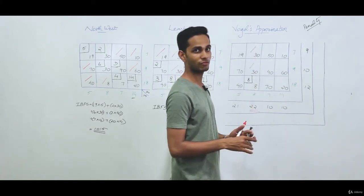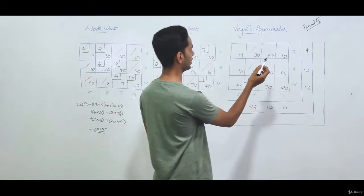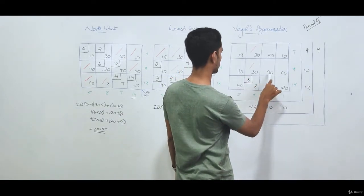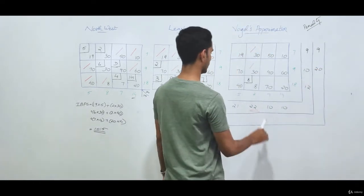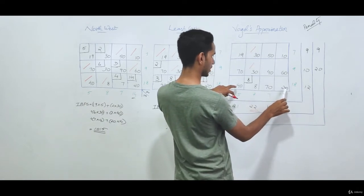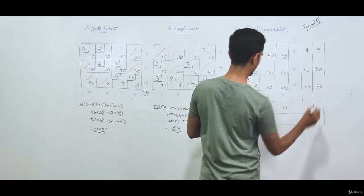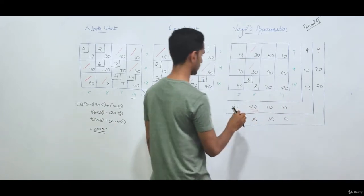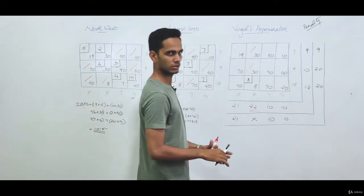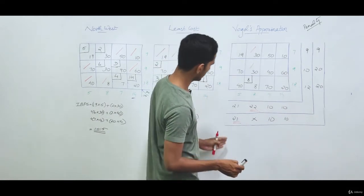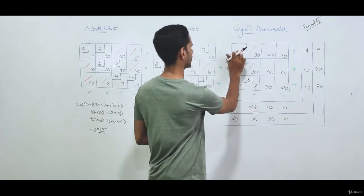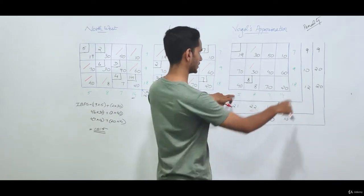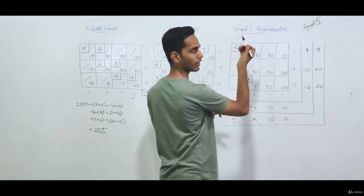We recalculate penalties after cancellation. Row 1 penalty remains 9; row 2's least elements are now 40 and 60, penalty is 20; row 3's remaining least elements are 20 and 40, penalty is 20. Column penalties: first column 10, another 10, one column is cancelled. The highest penalty is now for one column. In that column, the lowest cost cell is selected and we allocate the lower of 5 or 7, which is 5, cancelling that column.